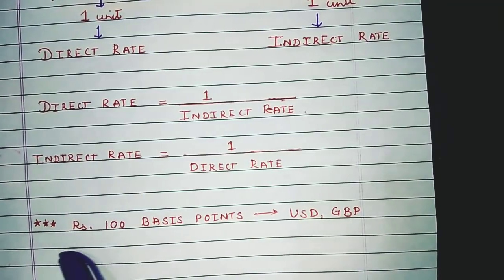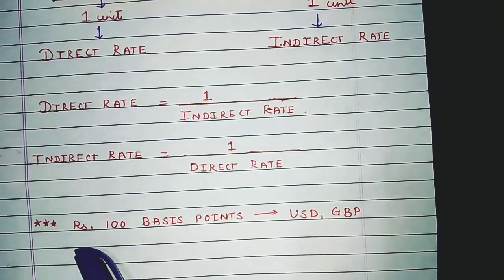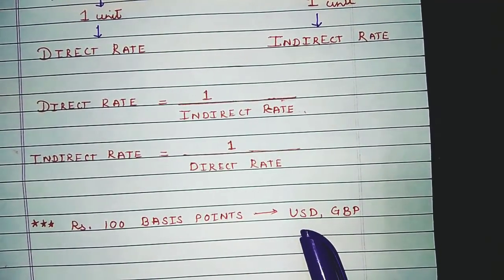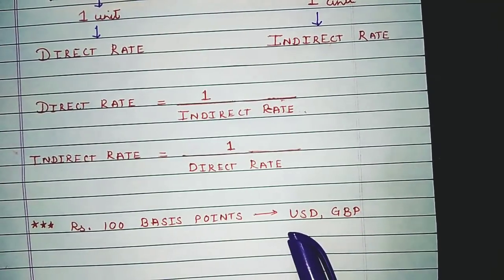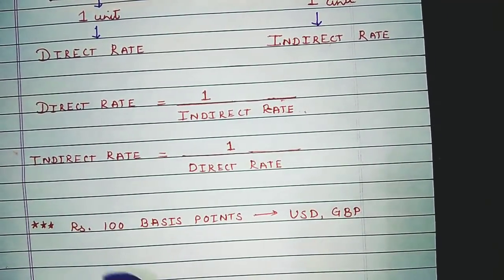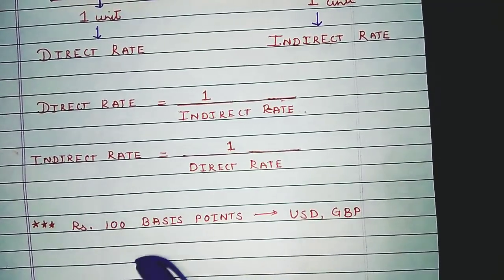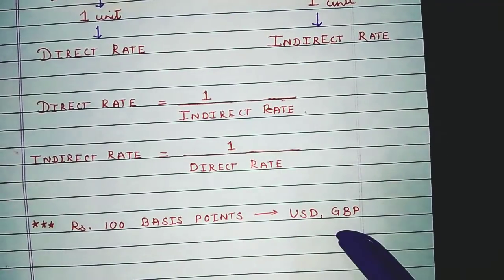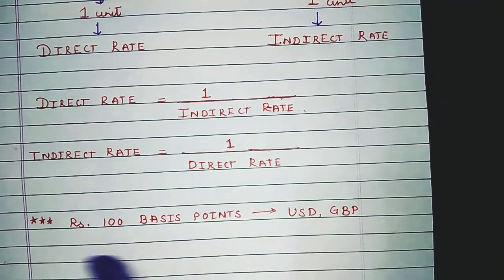Please note the star mark here. When converting Indian rupees into US dollars or Great Britain pounds, Indian rupees are considered as 100 basis points. You may not fully understand this now, but when we solve the numericals, you will easily understand it.